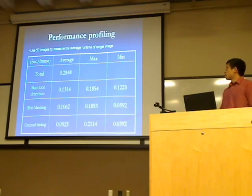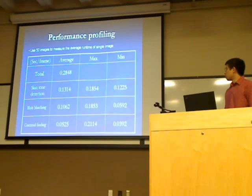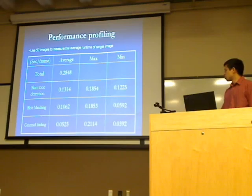This is our performance profiling. We use 50 images to measure the average runtime of a single image. The average for running the total process of a single image is around 0.28 seconds per frame. The skin tone detection module takes an average of 0.13 seconds per frame.